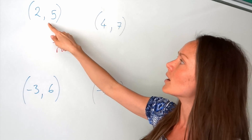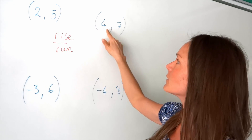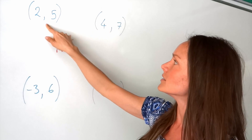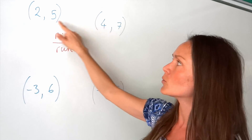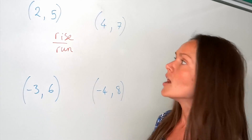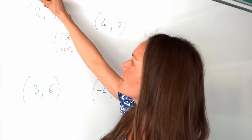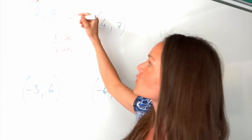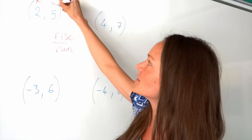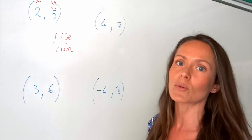In example number one, I've been given these two sets of coordinates here. Remember, the first number is the x coordinate, and the second one is the y.